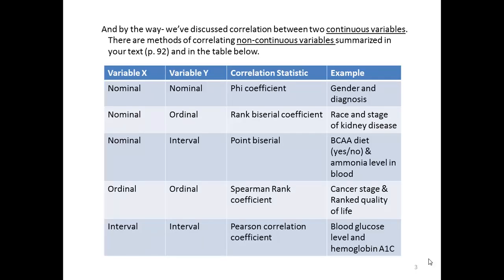For example, let's say we wanted to see if there was a relationship between two nominal variables, such as gender and diagnosis for a particular disease. We would not use the Pearson's R. We would use the phi coefficient.